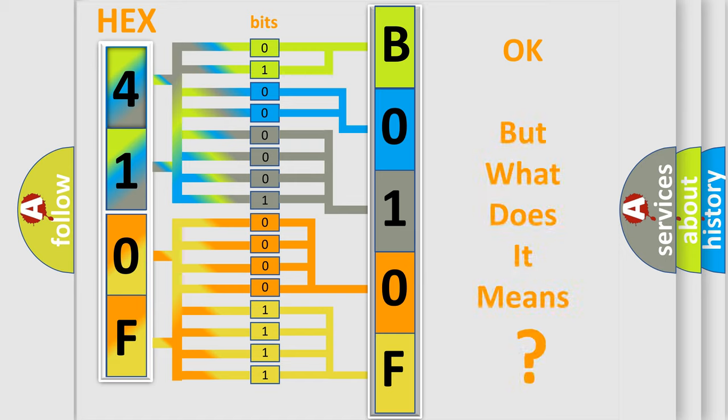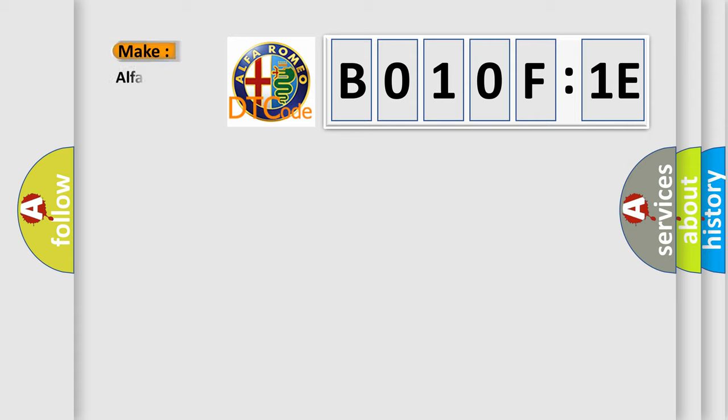The number itself does not make sense to us if we cannot assign information about what it actually expresses. So, what does the diagnostic trouble code B010F:1E interpret specifically for Alfa Romeo?